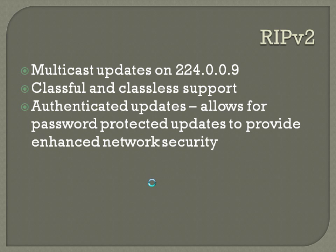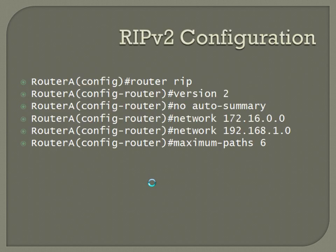RIP version 2 configuration starts identically to version 1 with 'router rip'. Once in router config mode, enter 'version 2' to specify version 2. To enable classless routing, enter 'no auto-summary', which enables variable-length subnet masking. You can then include subnets in your network statements. Network definitions use the same syntax: 'network 172.16.0.0', 'network 192.168.1.0'. The max-paths command to set load balancing above four is also identical to version 1.